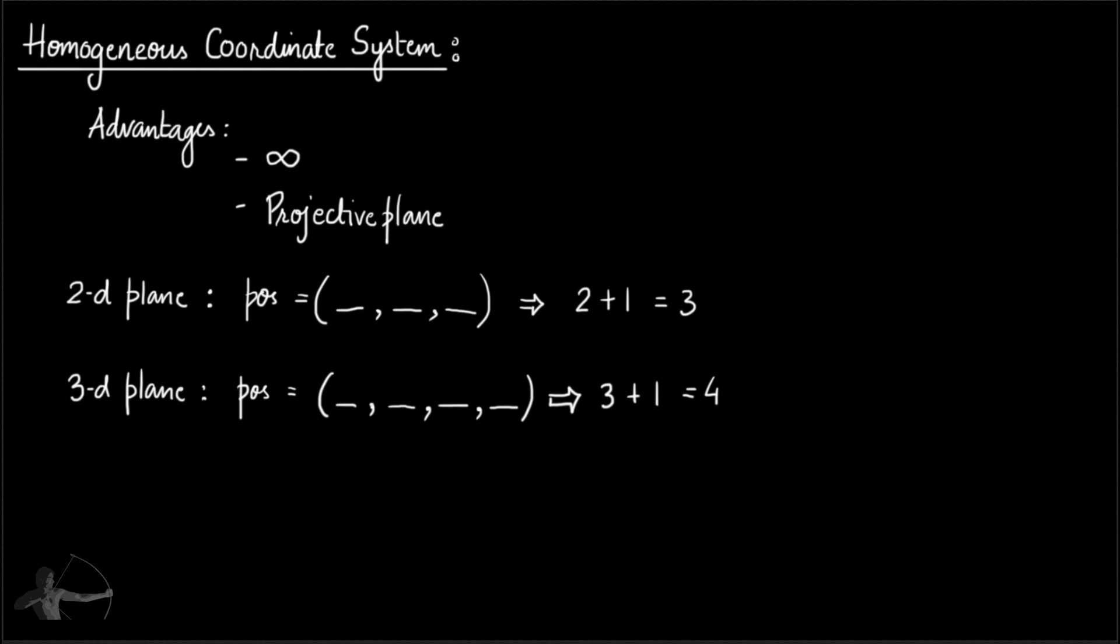For calculation in computer graphics we add a w in homogeneous coordinate system. So our positions are represented as vector four values and they are represented as x, y, z and w. In most cases this w value will either be 0 or 1. There is a special case in which this value will be besides 0 or 1 and we will take a look at that special case later.